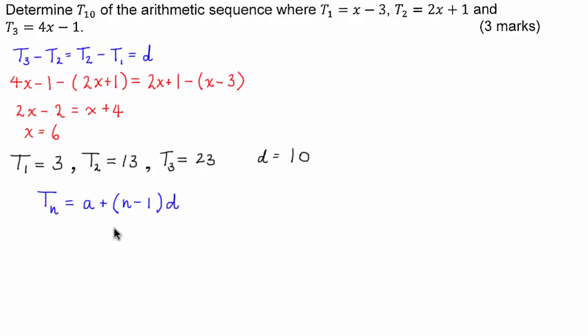So from here we can go right ahead and solve it so t_10 is going to be equal to a which is the first term or 3 plus we're looking for the 10th term, 10 - 1 multiplied by the common difference which is 10.